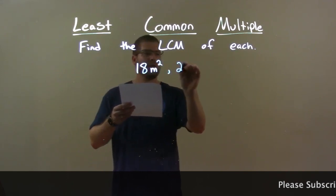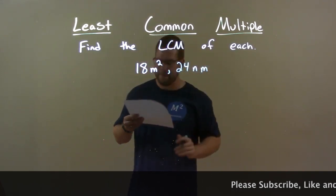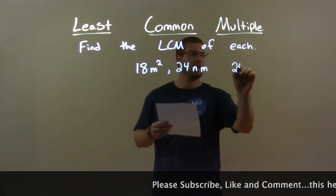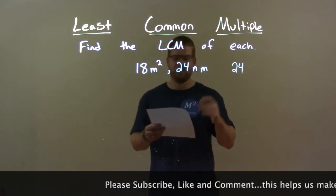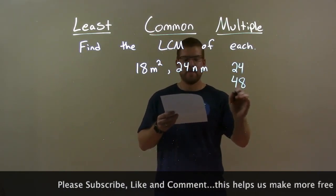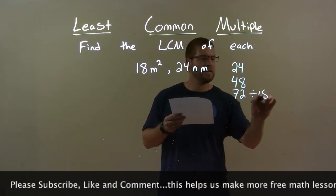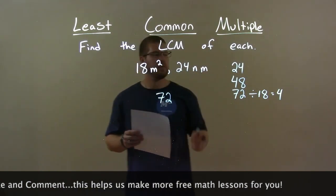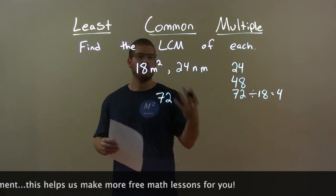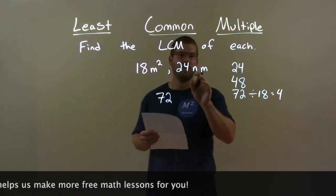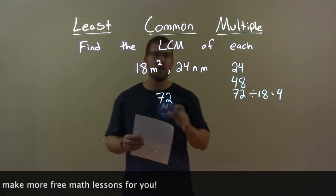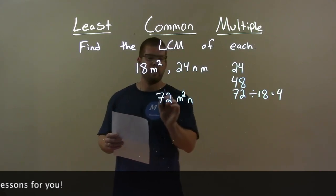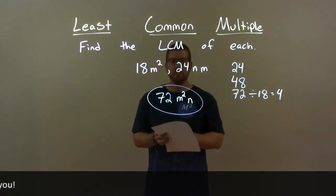18m squared and 24n squared. First I go through the numbers — 24 is the larger of the two. I go through its multiples to see which one is divisible by 18. 24 is not, 48 is not, but 72 is — 72 divided by 18 is 4. So 72 is the first multiple of 24 divisible by 18. Now for the variables: I have two m's here and one n and one m there. Encompassing the most of each variable — m squared and n. My final answer is 72m squared n.